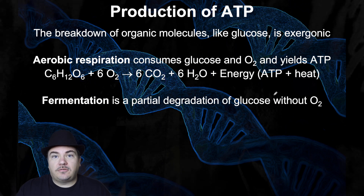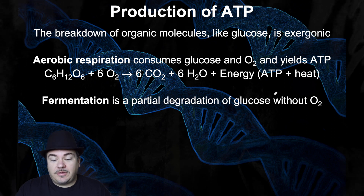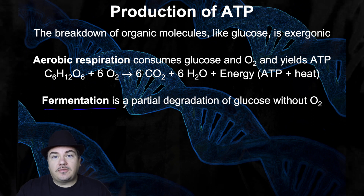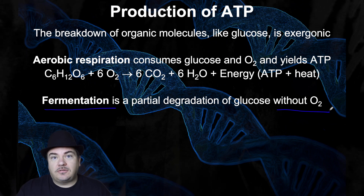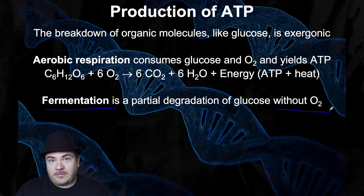For most of this series of lectures, we're going to be focusing on aerobic cellular respiration, which is one way of generating ATP. There is another way of generating ATP, which is a process called fermentation. The advantage of fermentation is it does not require oxygen. However, there's a huge disadvantage, which is it does not make hardly any ATPs. We'll talk about fermentation at the end of this series of video lectures.